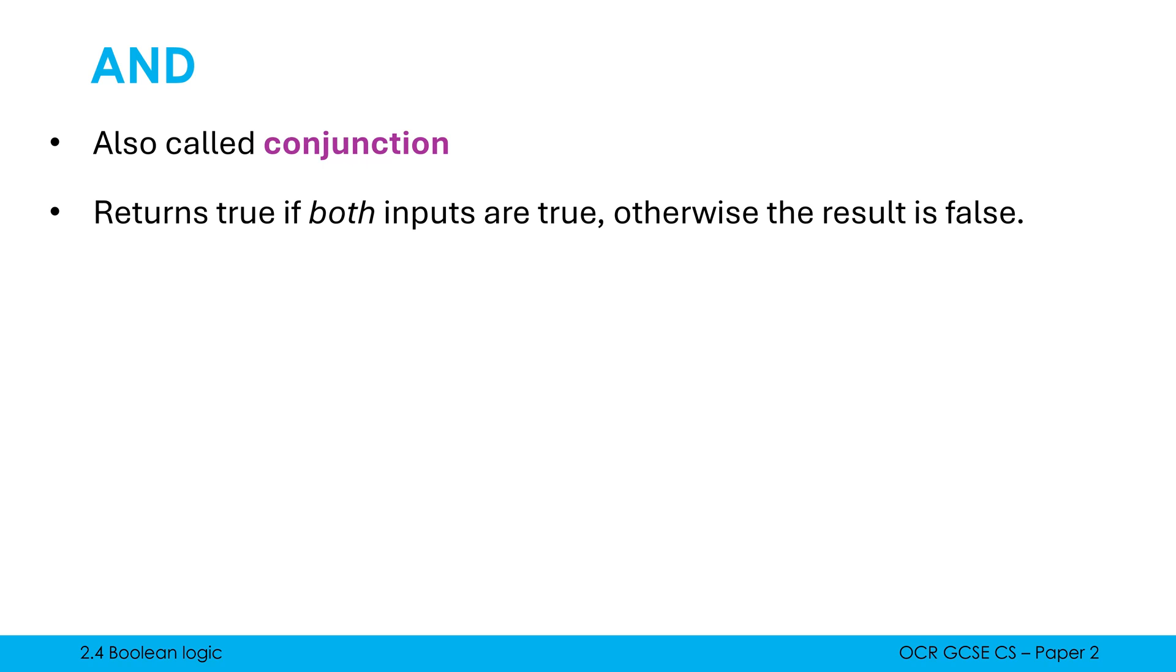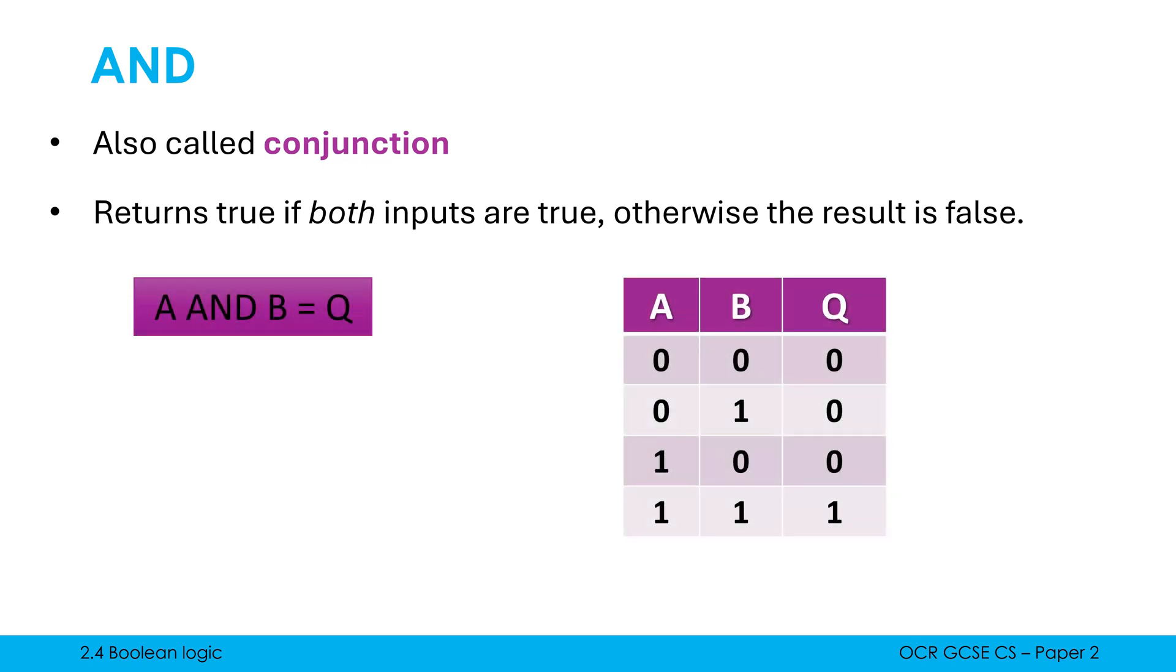The final operation to look at at GCSE at least is AND. AND is also called conjunction. So it's OR which is disjunction AND which is conjunction. It might help you in memorising this if you realise that con is a Latin word meaning together. And AND needs both sides together to be true for the whole thing to be true. So it only returns true if both inputs are true, otherwise the result is false. So AND is a lot stricter than OR. It needs both of those inputs to together being one for the whole thing to be one. And the logic gate itself is not too different to an OR gate, but it has a flat left-hand side, more like a semicircle. So we're going to have a look at how we can combine these three logic gates together to build more complex circuits and to complete more complex truth tables.